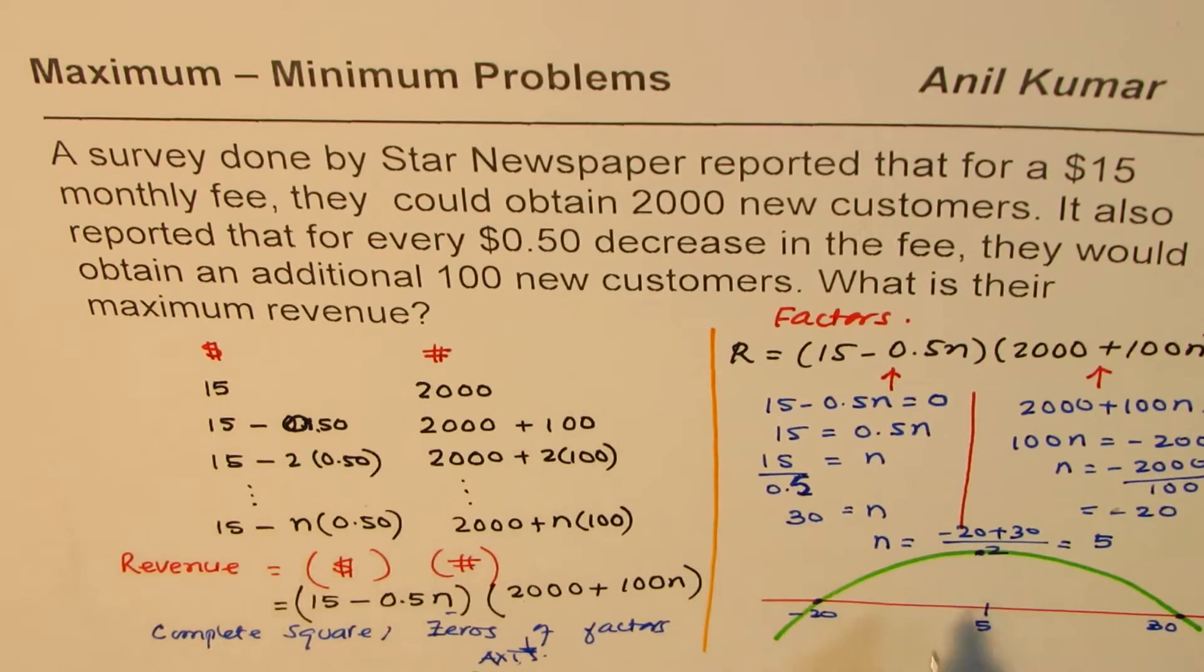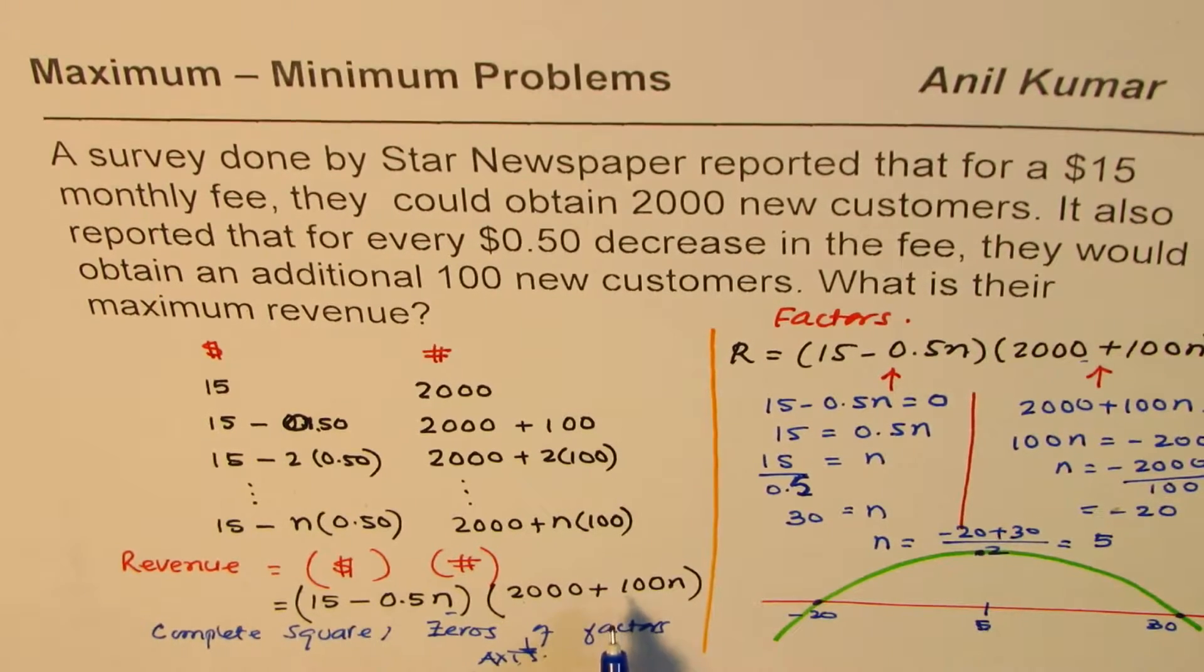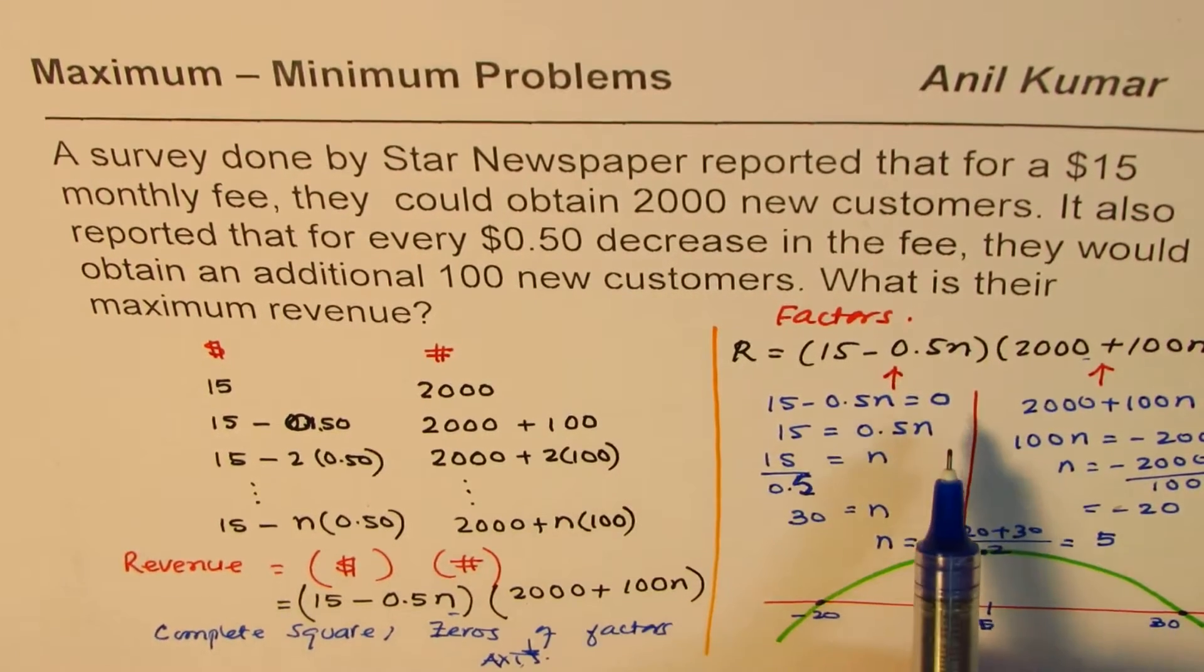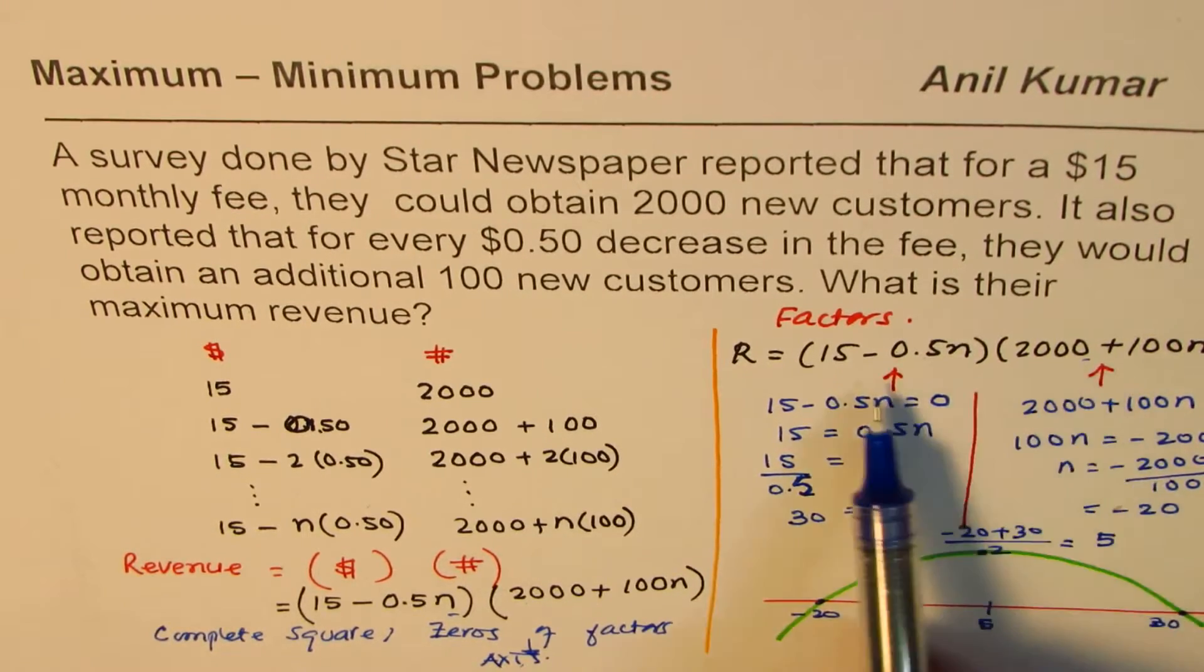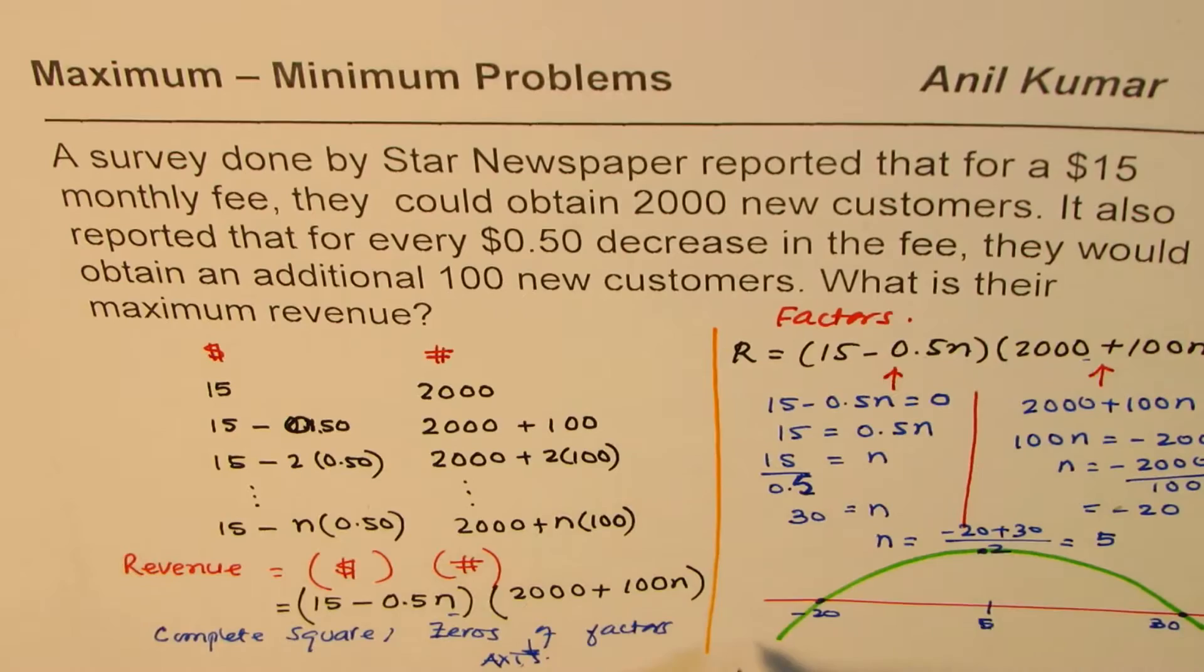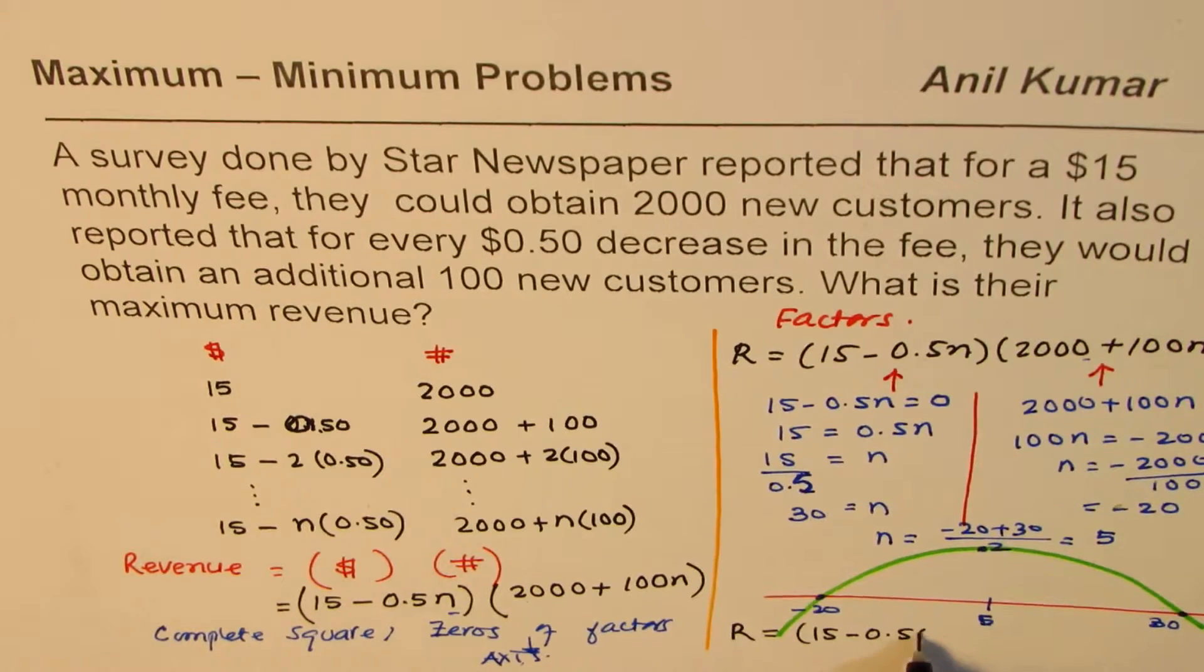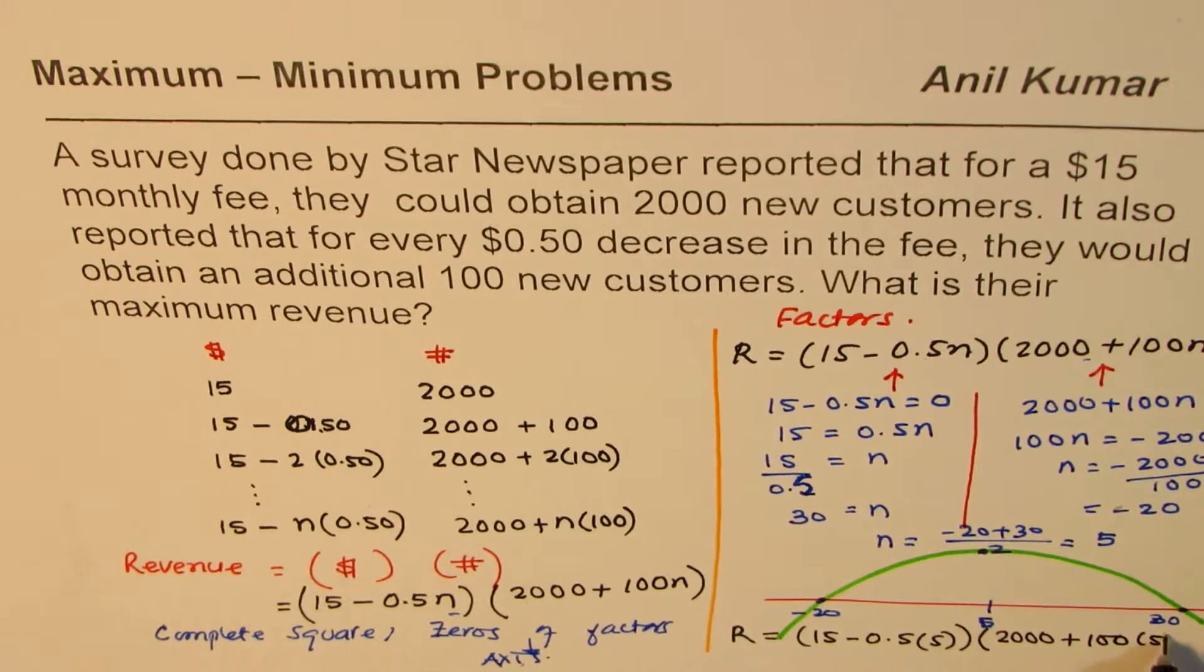So what is their maximum revenue? Their maximum revenue will come when n is 5. So you can substitute 5 in this equation and find the maximum revenue. So that is how it could be solved. At times, we could also find what is their cost for maximum revenue or how many customers will be there. All that can be answered. So let's write down n is 5 here and find. So revenue will be equals to 15 minus 0.5 times 5 and everything into 2000 plus 100 times 5.